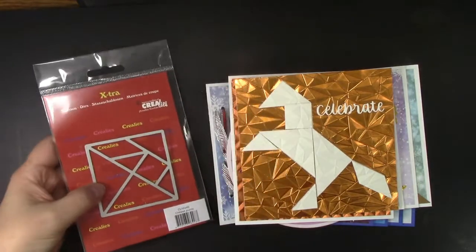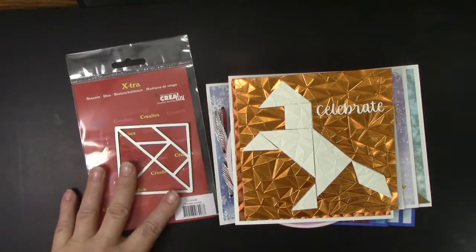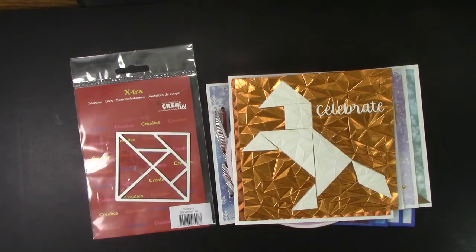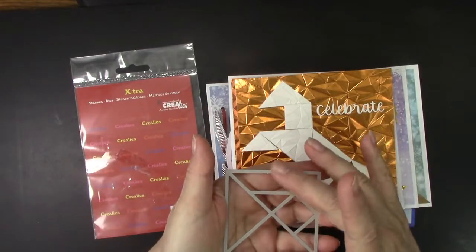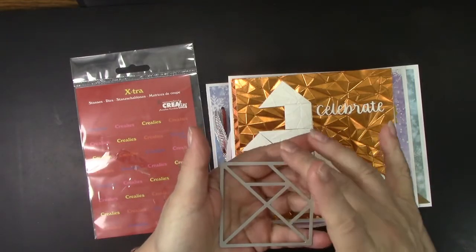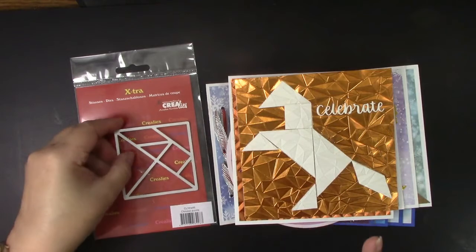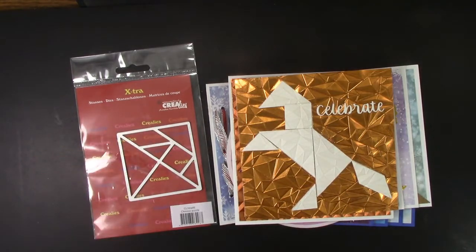Now Tangrams is a set of seven geometric pieces in different shapes and sizes that form a square. So as you can see this is a square and it has seven different pieces and with the Tangram hundreds of different figures can be formed but the rules require that all seven of the pieces must be used and no more and they cannot be superimposed on each other.